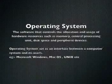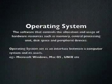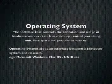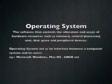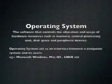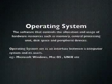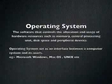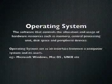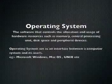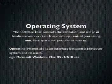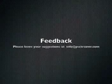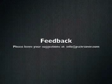What is an operating system? An operating system is software that controls the allocation and usage of hardware resources such as memory, CPU, disk space, and peripheral devices. It acts as an interface between the computer system and its users. Examples include Microsoft Windows, macOS, Unix, and Linux.